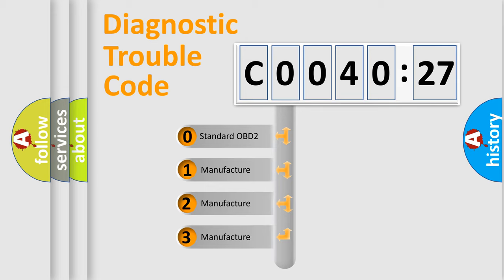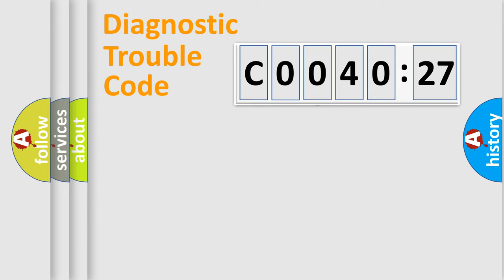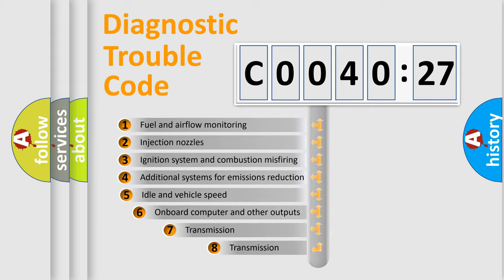If the second character is expressed as zero, it is a standardized error. In the case of numbers 1, 2, or 3, it is a manufacturer-specific error.